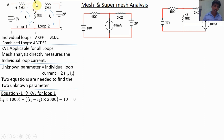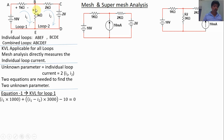In the shared branch, I1 flows from top to bottom and I2 flows from bottom to top, so the net current is I1 minus I2 from top to bottom. The voltage across the 3kΩ resistor is (I1 - I2) × 3000. Current enters from plus to minus — positive voltage. The source current enters from minus to plus — so minus 10 equals 0.